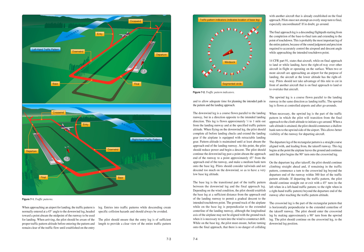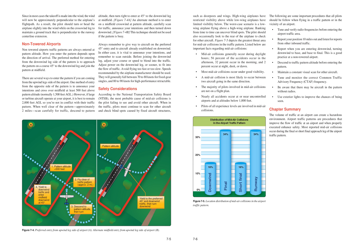If departing the traffic pattern, the pilot should continue straight out or exit with a 45-degree turn — to the left in a left-hand traffic pattern, to the right in a right-hand traffic pattern — beyond the departure end of the runway after reaching traffic pattern altitude. The crosswind leg is the part of the rectangular pattern that is horizontally perpendicular to the extended centerline of the takeoff runway. The pilot should enter the crosswind leg by making approximately a 90-degree turn from the upwind leg and continue to the downwind leg position, heading slightly into the wind to maintain a ground track perpendicular to the runway centerline extension.